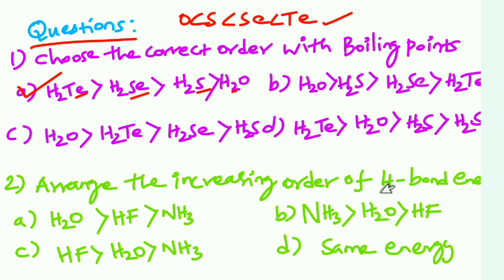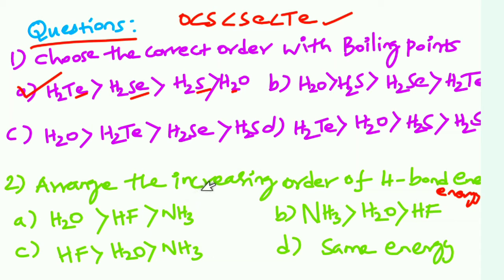Second question: Arrange in increasing order of hydrogen bond energy. Who has the highest electronegativity and smallest atom size? The atoms are fluorine, oxygen, and nitrogen. Fluorine has the highest electronegativity and smallest size, so fluorine forms the strongest hydrogen bond, greater than oxygen, greater than nitrogen. Option C is the correct answer.